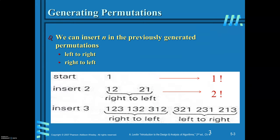There are two possible orders of insertion: left to right and right to left. Start with one element — the only permutation is {1} itself. For two elements, insert 2 from right to left, giving permutations: {1,2} and {2,1}. For three elements, insert 3 from right to left into the first permutation {1,2}, producing: {1,2,3}, {1,3,2}, and {3,1,2}.